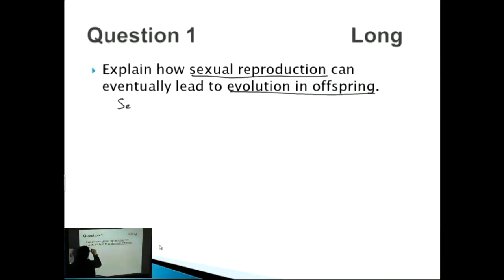Sexual reproduction leads to variation. That's the way that sexual reproduction leads to evolution - it's about the variation. This variation is associated with sexual reproduction and there are three main reasons why. Firstly, independent assortment during meiosis contributes to variation.